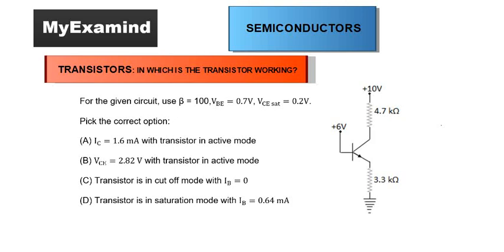Dear students, MyExamine brings you a very good question on the working mode of a transistor. In this question we will try to understand what is the particular mode in which the transistor is working. Here we have a common emitter configuration and the value of β is given as 100. The value of VBE is given as 0.7V and VCE saturation is given as 0.2V. There are four options out of which we need to choose the correct one, so the first thing we must do is identify the mode in which the transistor is working.